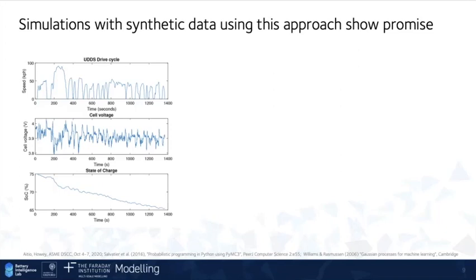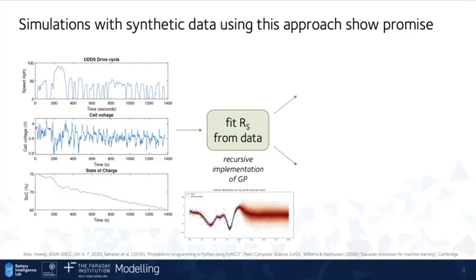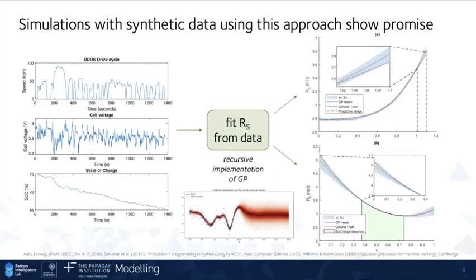So we fit this series resistance to that data using this recursive Gaussian process implementation. And here are the results. And so what you can see here is the ground truth is shown in red. So that's, we know what the truth is, because this is just a model based kind of study. And then the blue shows the mean and the variance of our estimates. And what this is showing is the resistance, which is our health metric, both as a function of time on this top axis, and as a function of state of charge on the bottom axis. And what's really cool about this is that actually, we only observe the state of charge range between about 40% and 75%. But we can still extrapolate the behavior beyond that quite smoothly. And that's one of the big advantages of these GPs. We can also extrapolate their health into the future by a small amount in this case.